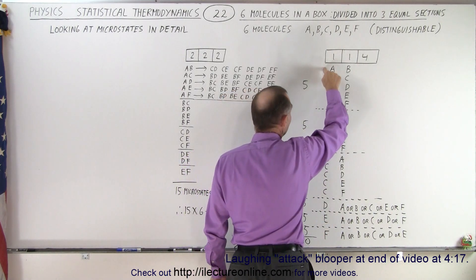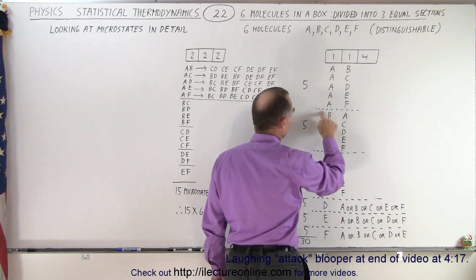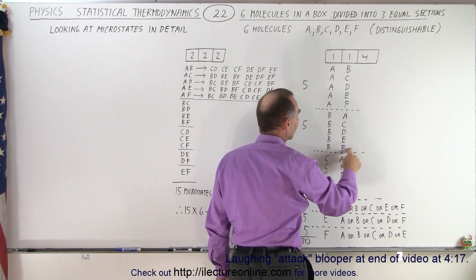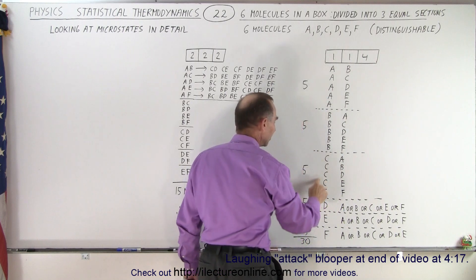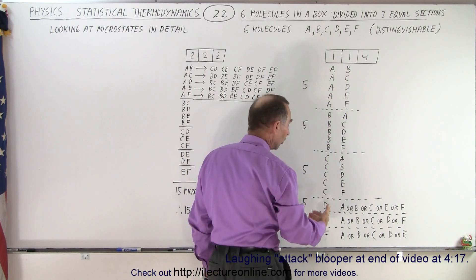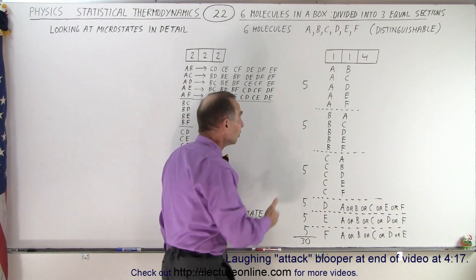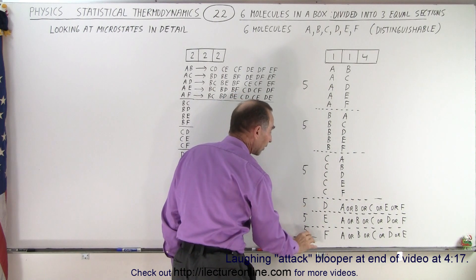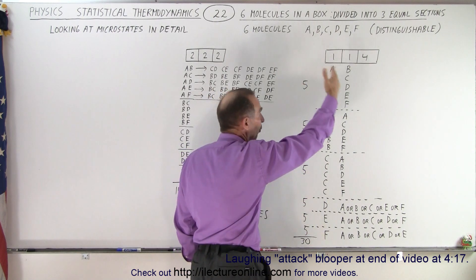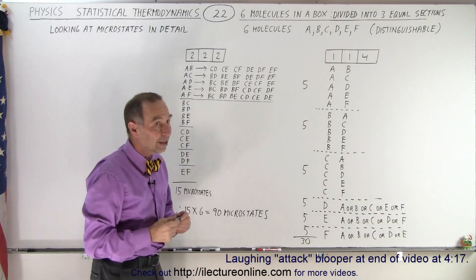So notice for A in the left box we have five possibilities for the middle box. For B in the left box we have five possibilities in the middle box. For C in the left box we have five possibilities in the middle box and so forth. So when we do that for all six molecules A, B, C, D, E, and F you can see there's a total of thirty different microstates because there are thirty different ways in which we can arrange those six molecules in that particular case.